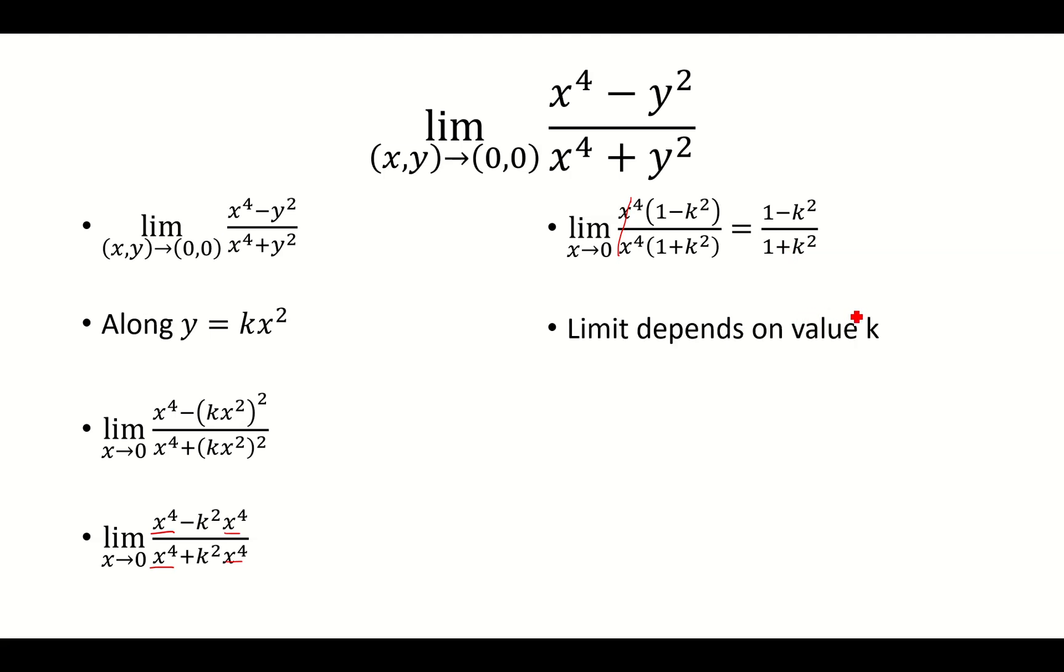And obviously the limit here depends on the value of k. So depending on what value of k here, you're going to get a different limit. So for example, if you took the path y equals x squared versus y equals 2x squared, you would get two different limits. And so in that case, the limit does not exist.